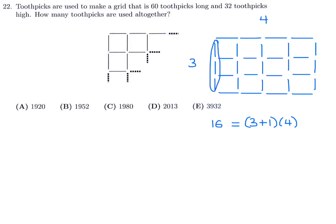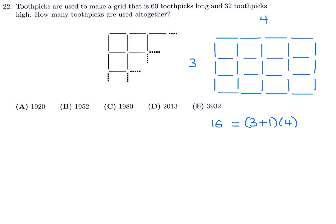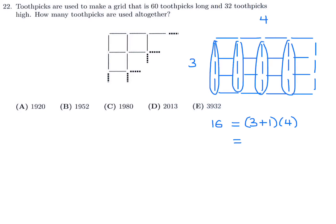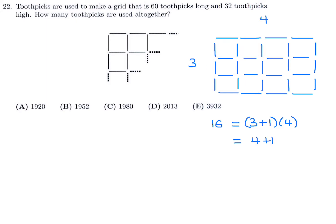Now for the vertical toothpicks: this side is four, but the number of columns is one more — so four plus one equals five columns. In each column, the number of toothpicks equals the dimension of that side, which is three. So five times three is 15 vertical toothpicks. The total is 16 plus 15, which is 31 toothpicks.